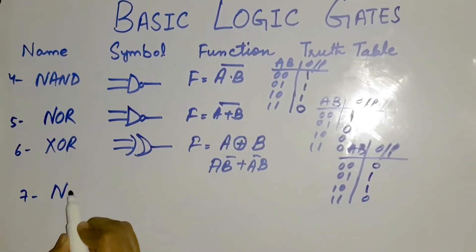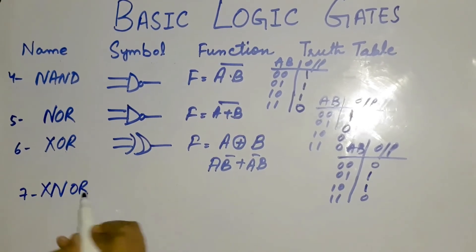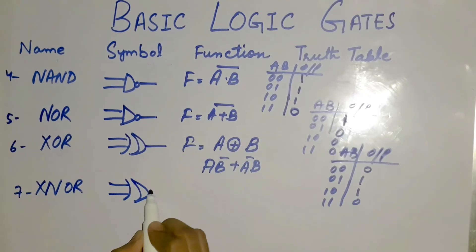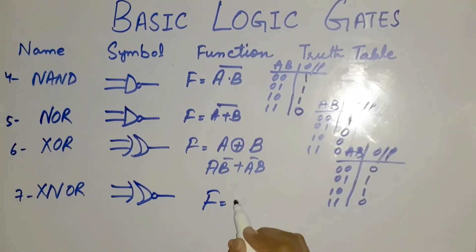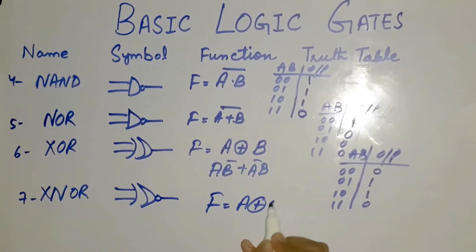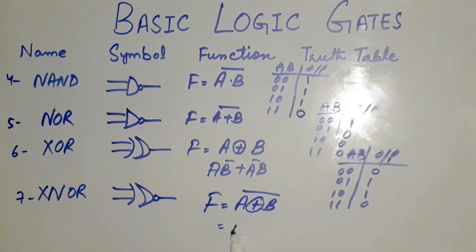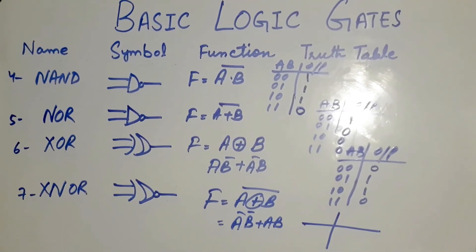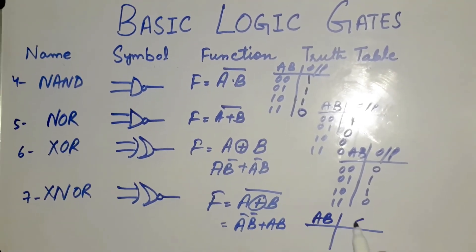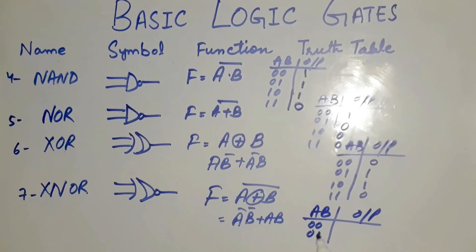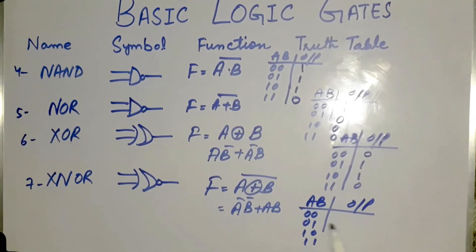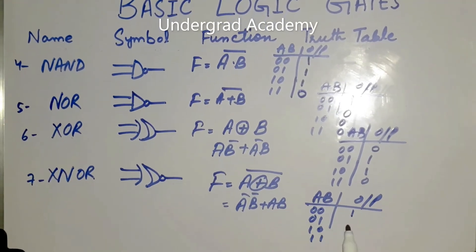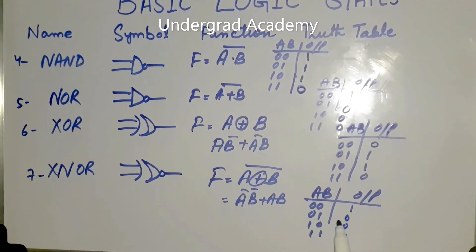The last one, we have the XNOR gate. It is represented by the XOR symbol with an inverter at the end. Its function is f equals a XNOR b, or ā·b̄ plus a·b. It is the invert of the XOR gate. Truth table: 0-0, 0-1, 1-0, 1-1. It gives 1 when both inputs are the same, and gives 0 when at least one input is different.